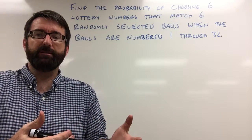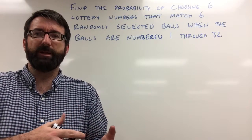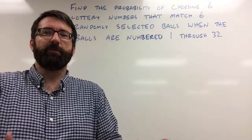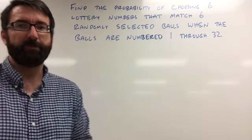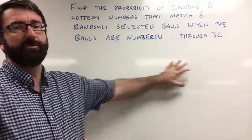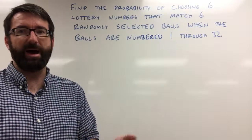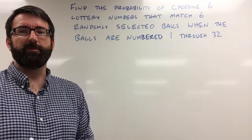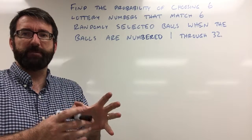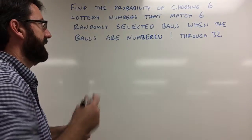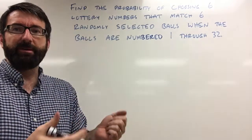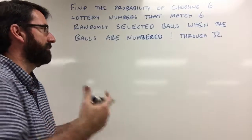So the first thing we need to find with this problem is how many different ways can we select 6 balls out of 32. Let's assume that the order doesn't matter. We're not told in the problem that the order that the balls are pulled is going to matter. And so if the order doesn't matter, that means this is a combination.